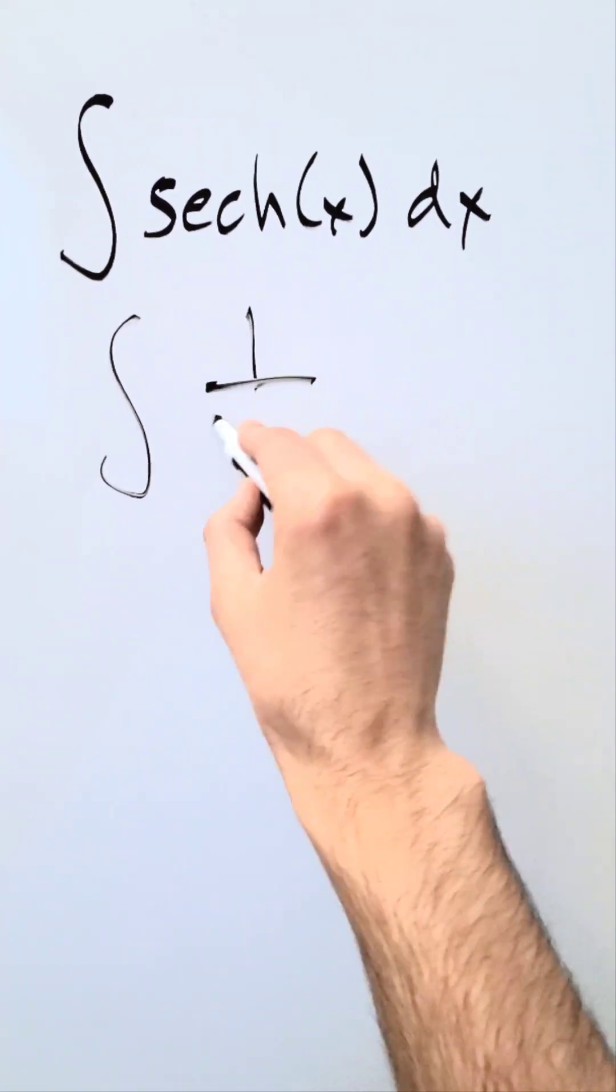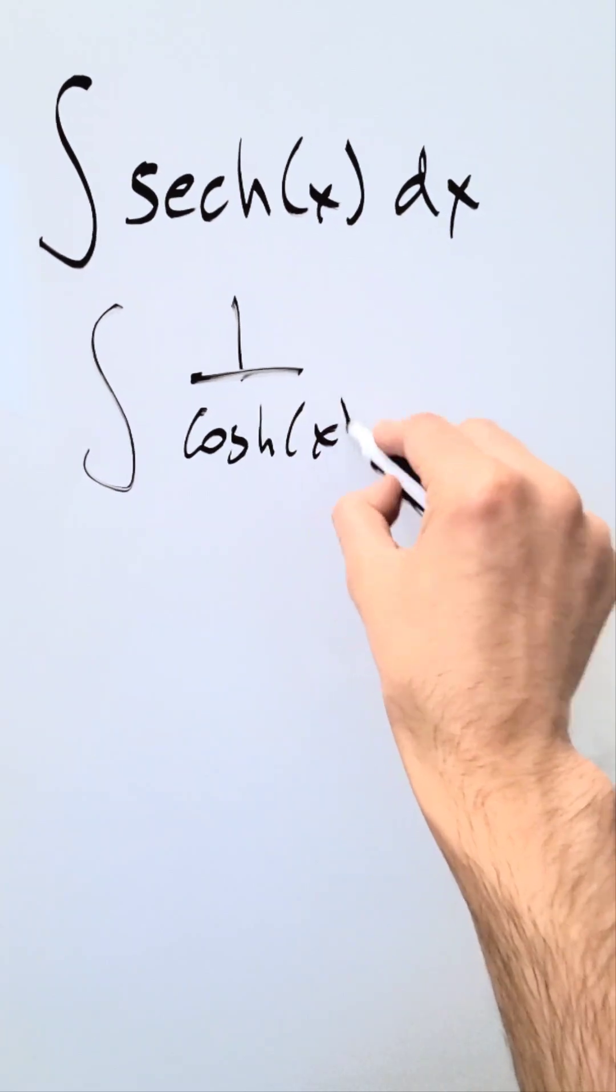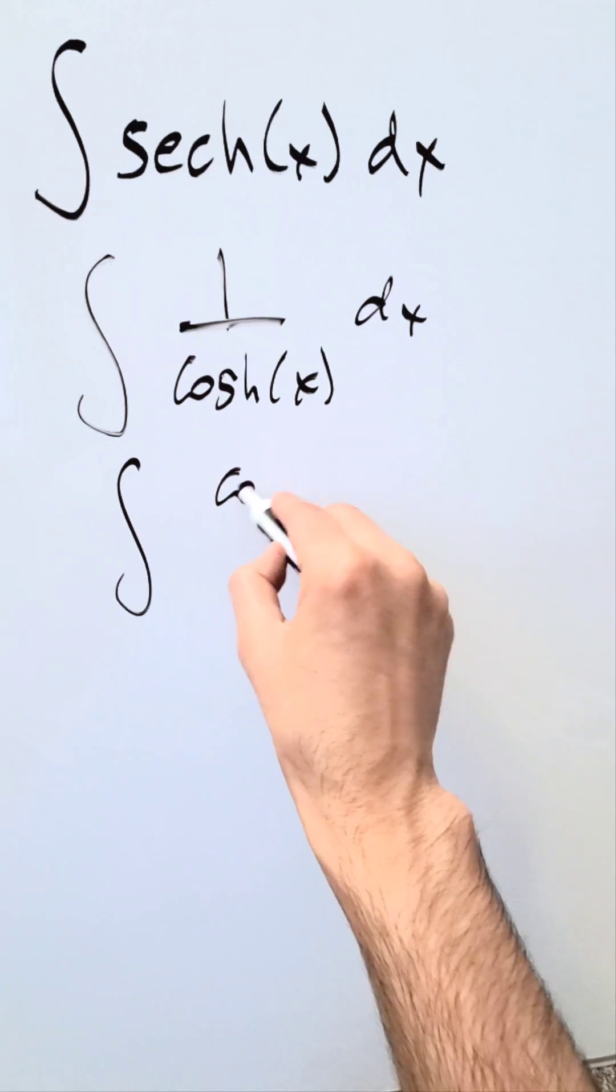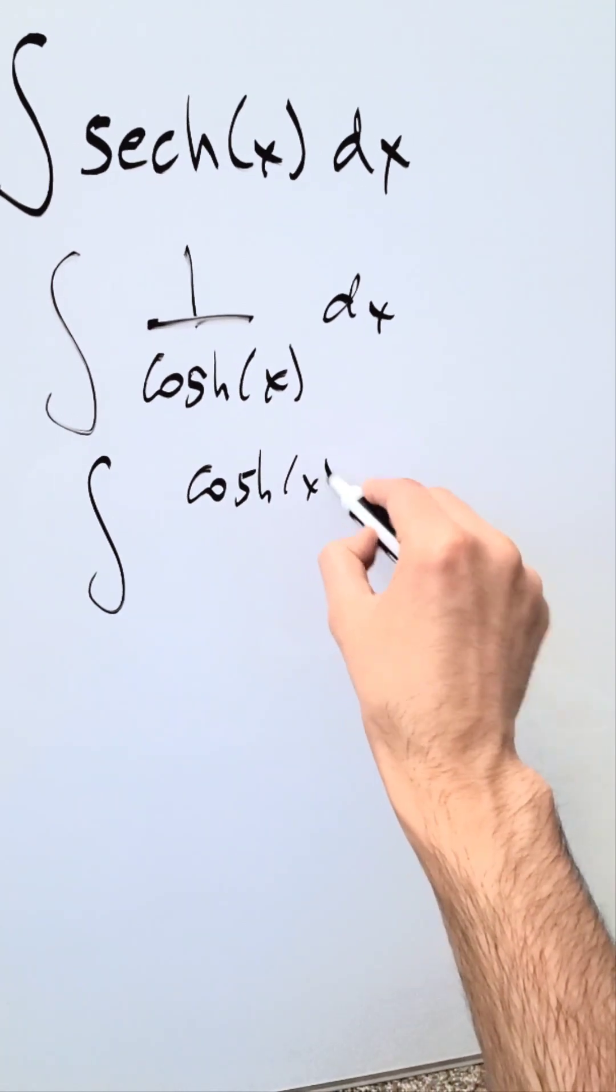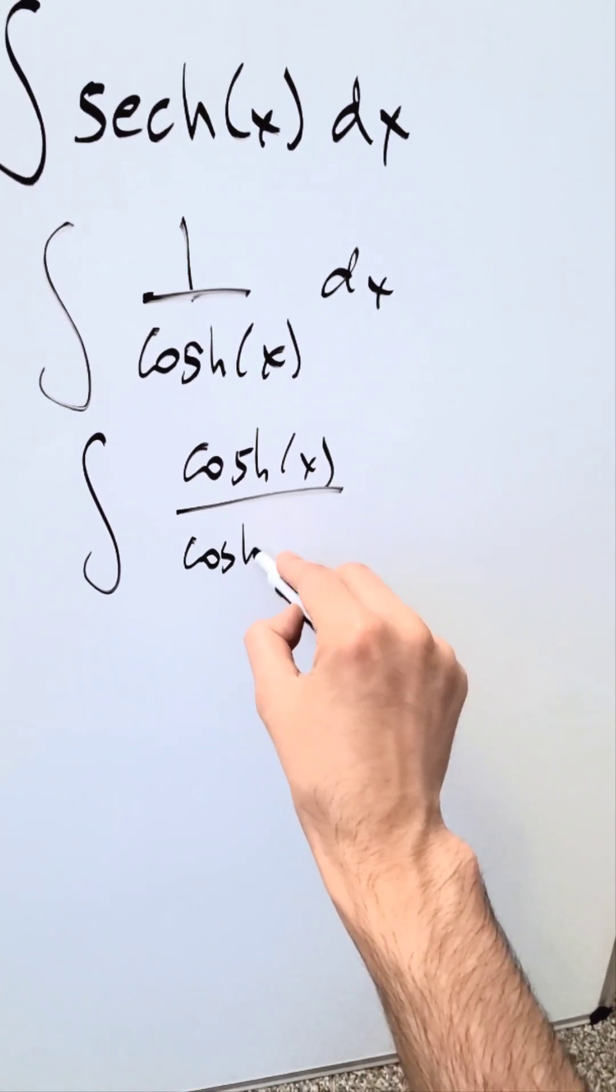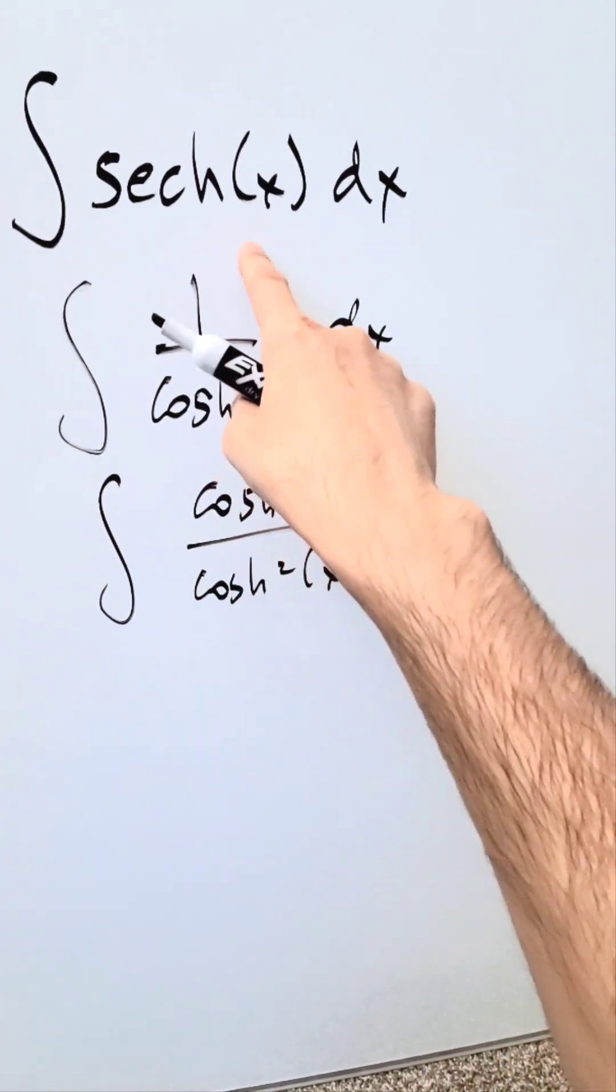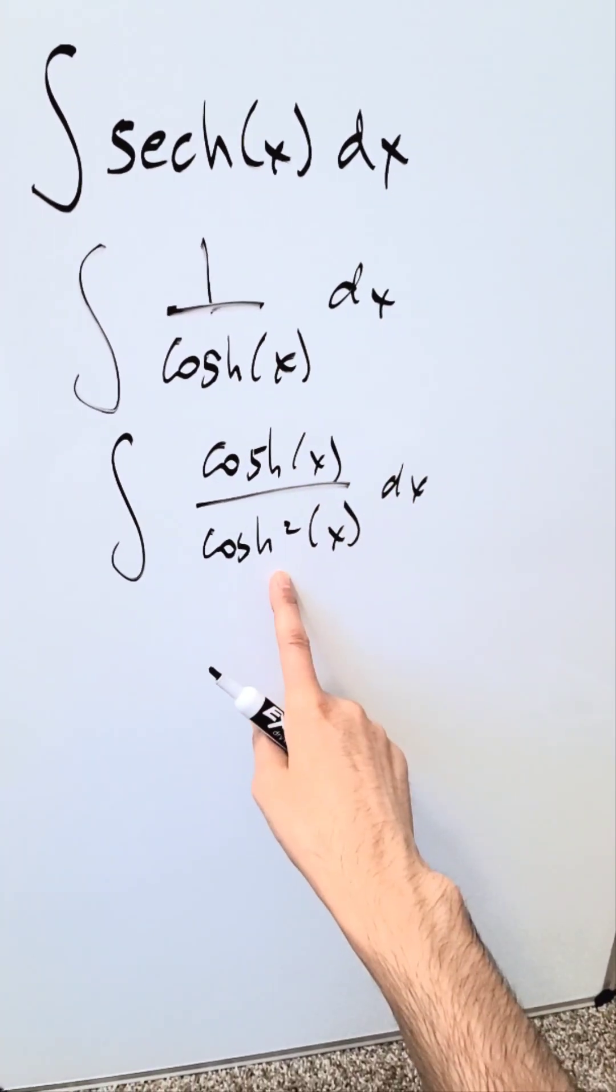This right here is no different than looking at the reciprocal of your basic hyperbolic cosine function. You're looking at the hyperbolic cosine in the numerator divided by the hyperbolic cosine squared in the denominator. If you simplify this, you take it one step further. This is exactly what we have.